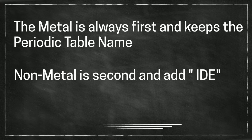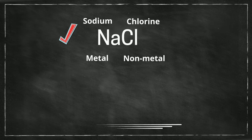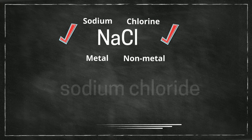So, let's look at a couple examples. In this example, you have sodium, which is a metal, chlorine, which is a non-metal, and it becomes sodium chloride.